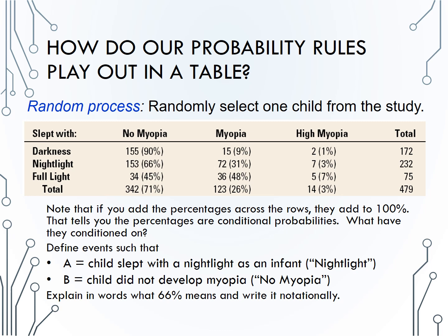Let's define events such that A represents a child sleeping with a nightlight as an infant, and B represents a child not developing myopia. In notation, 0.66 would be represented as the probability of B given A. In words, if we repeatedly randomly select a child who used a nightlight as an infant, about 66% of those children will not develop myopia.